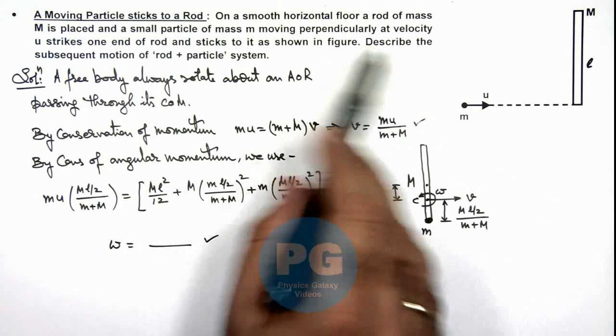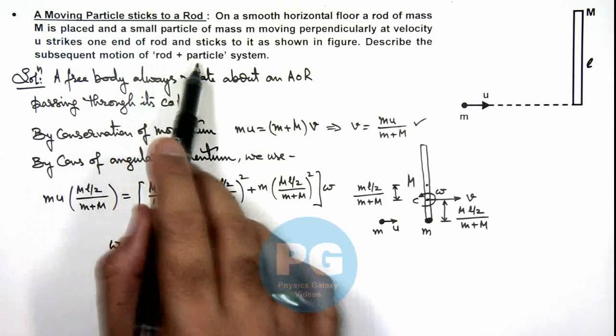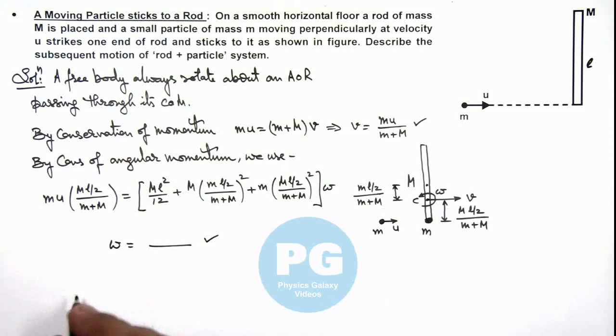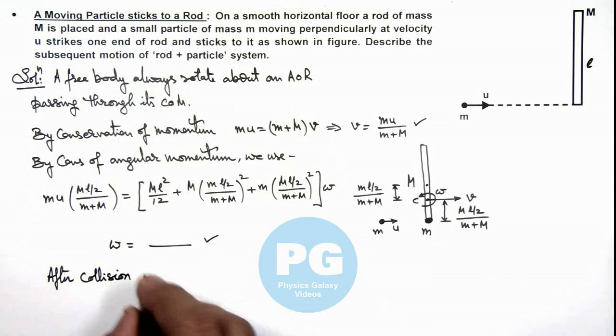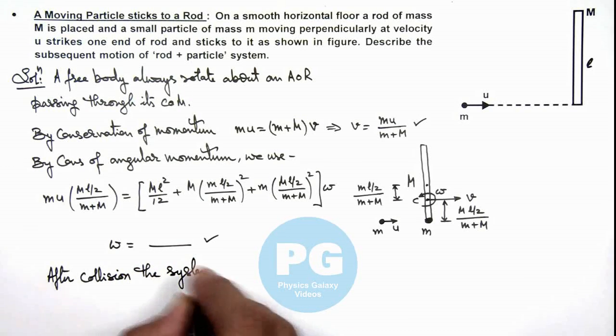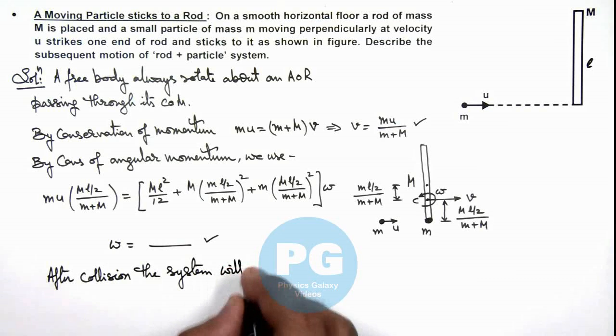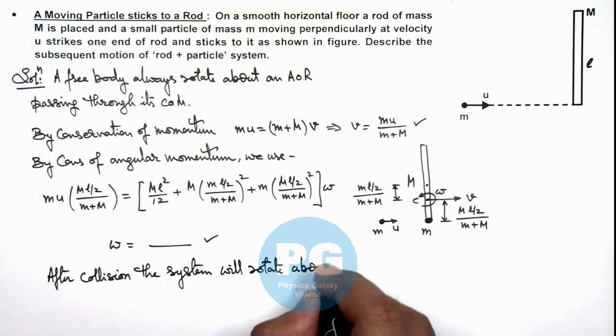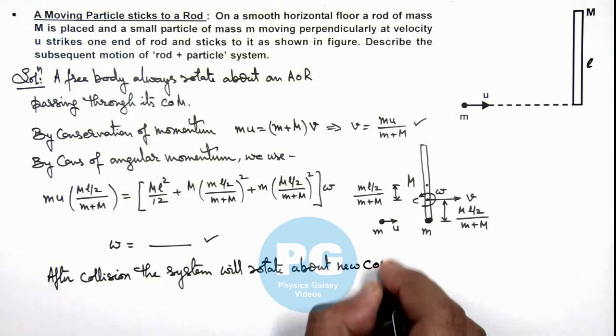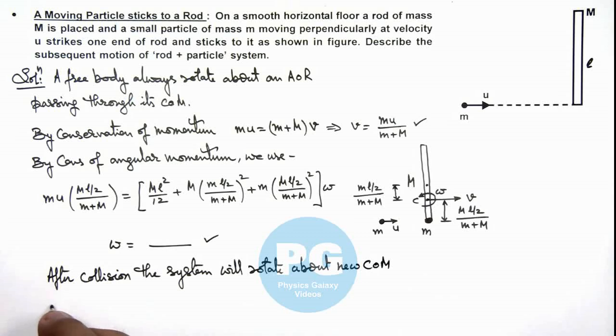So we are required to describe the subsequent motion of rod plus particle system. Here we can see: after collision, the system will rotate about new center of mass at angular speed omega.